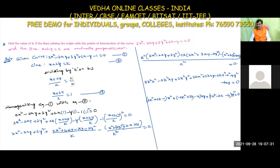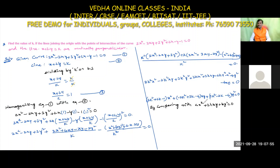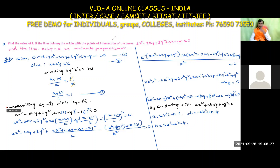This is in the form ax² + 2hxy + by² = 0, the homogeneous equation of a pair of straight lines. Comparing: a = 2k² + 2k - 1, 2h = -2k² + 3k - 4, and b = 3k² - 2k - 4.